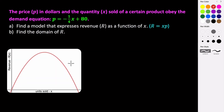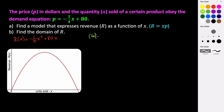The graph opens downward, so it will cross the x-axis at two points. We want to know where those x-intercepts are. For part b, finding the domain means finding those x-intercepts, which occur when revenue equals zero. So we set zero equal to negative one-fourth x squared plus 80x.